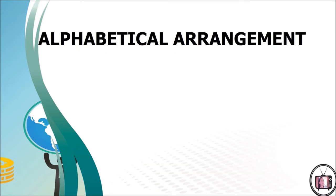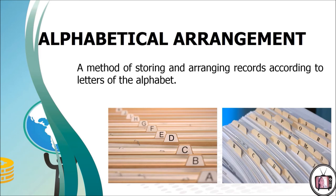One of the types of filing arrangement is the alphabetical arrangement. It is a method of storing and arranging records according to letters of the alphabet. It may be done using either the first names or surnames, but whichever is chosen must be consistent throughout the filing system. In cases where names start with the same letter, the second letter is taken into consideration, then the third, and so on. Alphabetical arrangement is the most popular method of filing and is suitable for both small and large organizations.